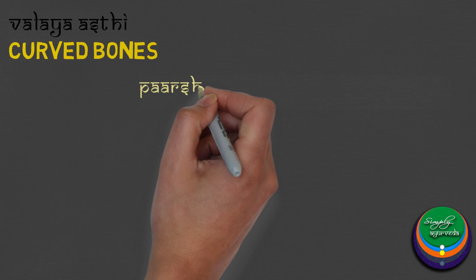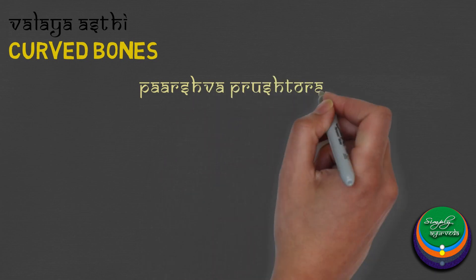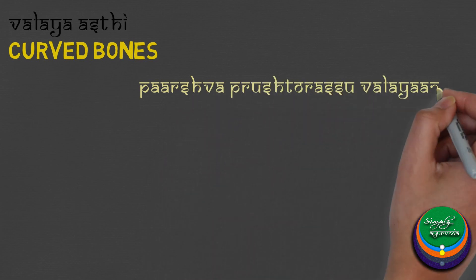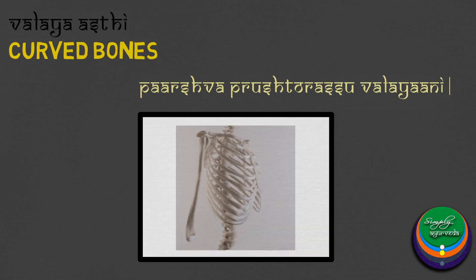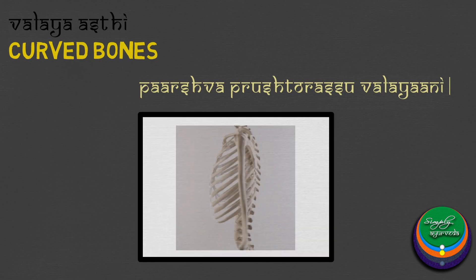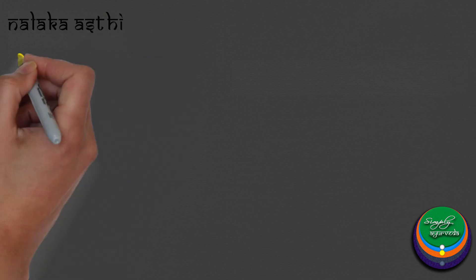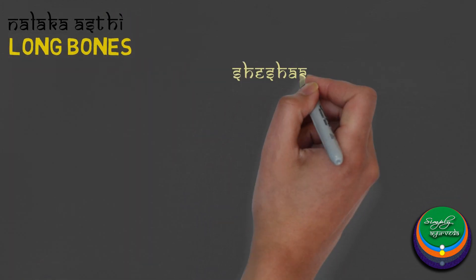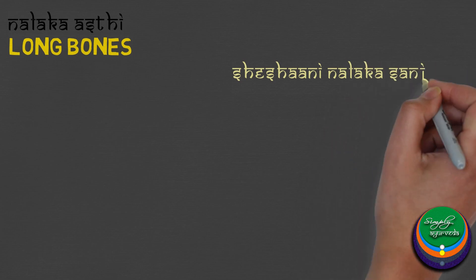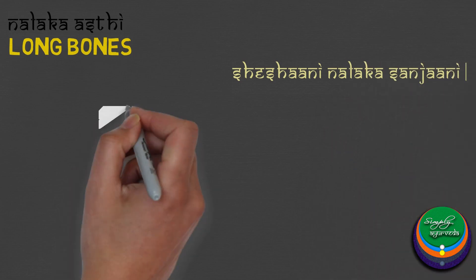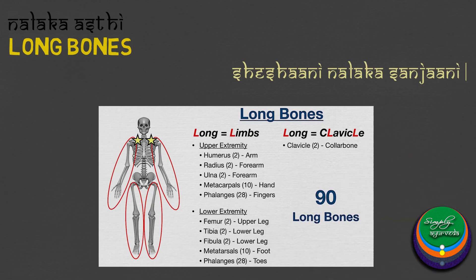Valayasthi or curved bones: the ribs are curved and along with the vertebrae and sternum form a protective ring in the thoracic cavity; these are included in Valayasthi. Nalakasthi or long bones: the rest of the bones in the body come under Nalakasthi. According to Bhava Prakasha, they include the bones of hands, feet, fingers, toes, forearms, arms, legs and thighs.